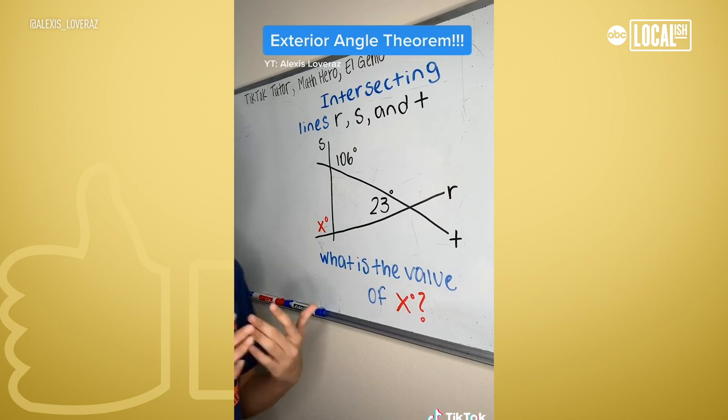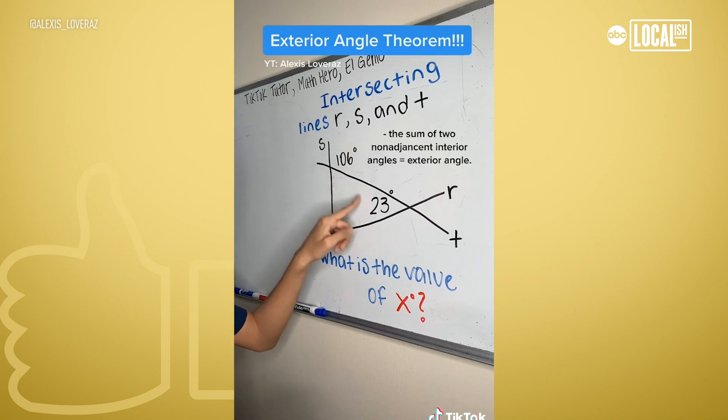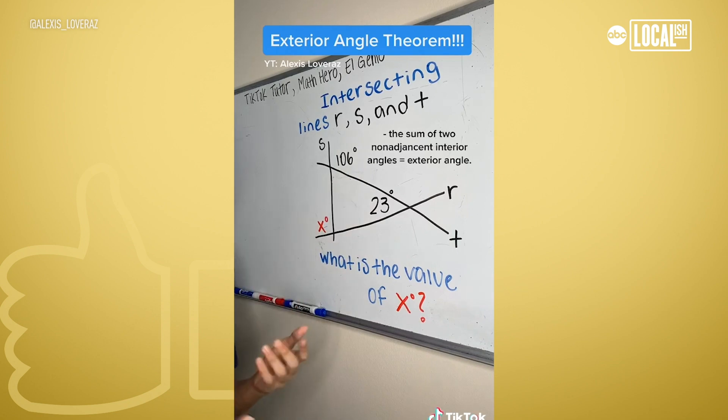And what is an exterior angle? Well, basically, that is the sum between the two non-adjacent interior angles, which will give us our x value.